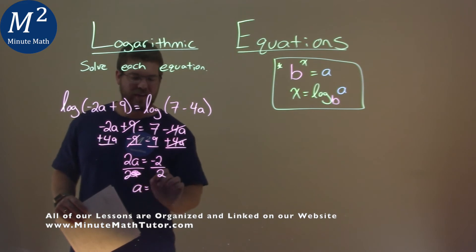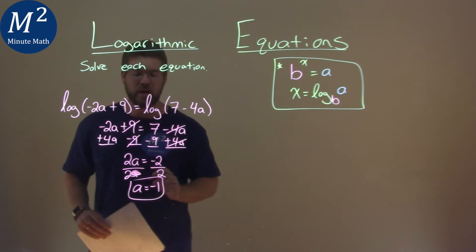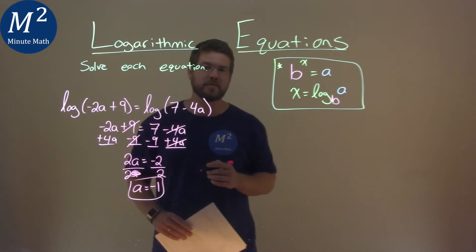And we're left with an a on the left-hand side, and negative 2 divided by 2 is negative 1. And so our final answer here is just a equals negative 1.